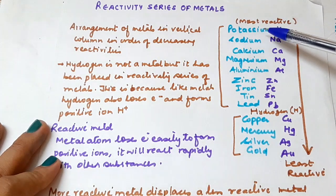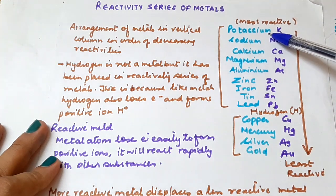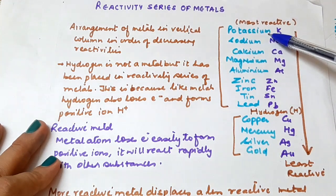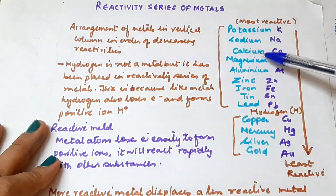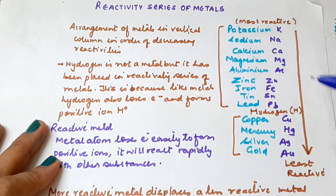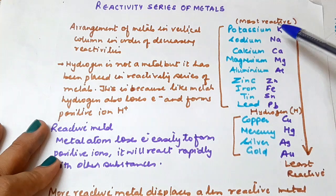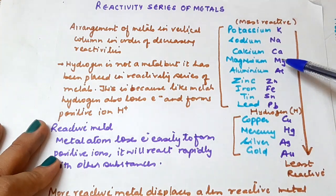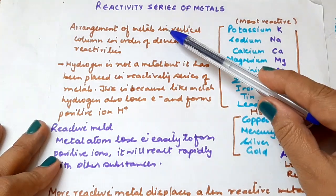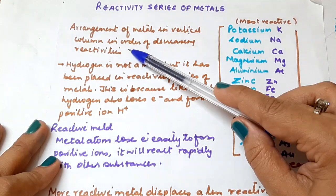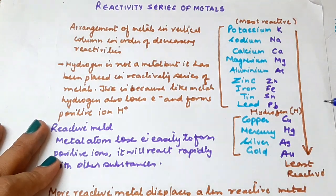The reactivity series is basically an arrangement of metals in order of decreasing reactivities. We place the most reactive metal at the top, and as we move down, the reactivity of the metal decreases. Gold is the least reactive metal. Potassium, sodium, calcium, magnesium — these are listed in order of decreasing reactivity. The arrangement of metals in a vertical column in order of decreasing reactivities is called the reactivity series of metals.